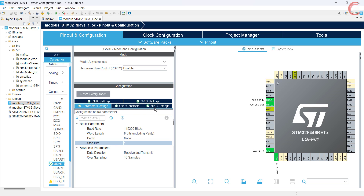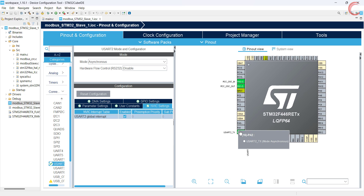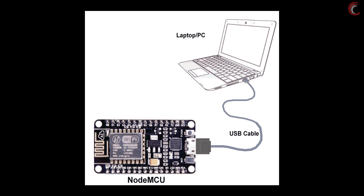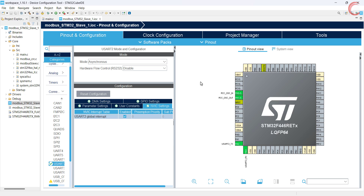I have also enabled the interrupt so that we can receive data in the interrupt mode. The pins PA2 and PA3 have been set as the TX and RX pins. The connection with the Nucleo board is pretty simple — you just need to connect the controller using the USB cable. You can also use some UART to RS232 converter, or use the RS485 module as we did in the previous videos.